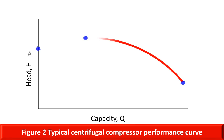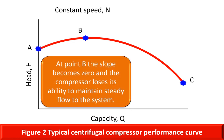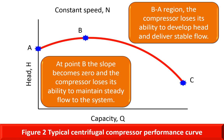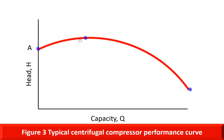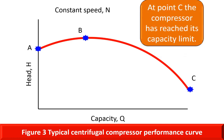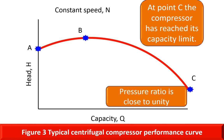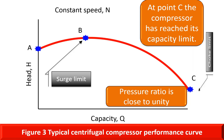At point B of the curve, the slope becomes zero and the compressor loses its ability to maintain steady flow to the system. As the inlet flow is reduced further in the region B to A, tremendous recirculation is set up at the exit region of the blade pressure surface. Energy losses due to this recirculation cause drooping performance characteristics at the low flow region. As the flow is increased beyond B, the head starts decreasing. At point C, the compressor has reached its capacity limit. As the flow increases further, the pressure ratio drops to unity and the compressor has reached the choke flow regime. The minimum and maximum flow rates of the compressor at constant speed are called surge and choke limits. At the choke point, the velocity somewhere in the compressor reaches the speed of sound.